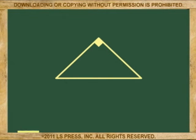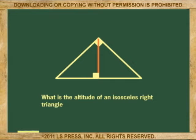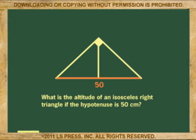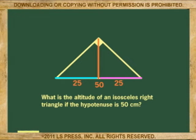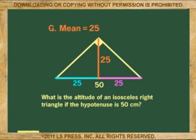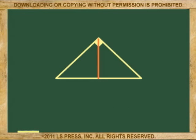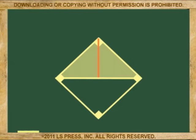Another example: what is the altitude of an isosceles right triangle if the hypotenuse of the triangle is 50 centimeters long? An isosceles triangle is defined as one that has two equal sides. Therefore, the altitude of the triangle must break the hypotenuse into two equal parts of 25 each. 25 times 25 is 625, and the square root of 625 is 25. The altitude is 25 also. It makes sense because an isosceles right triangle is half of a square and the hypotenuse is a diagonal of the square.